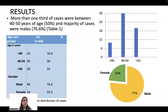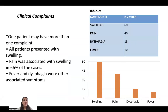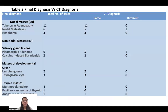Results: More than one-third of the cases were between 40 to 50 years of age, and the majority of cases were male. Regarding clinical complaints, all patients presented with swelling. Pain was associated with swelling in 66 percent of the cases, and fever and dysphagia were other associated symptoms. One patient may have had more than one complaint.